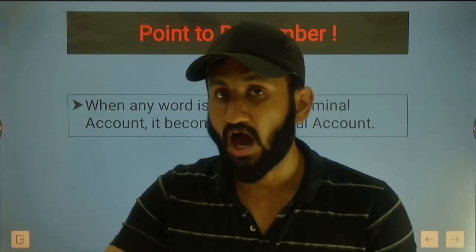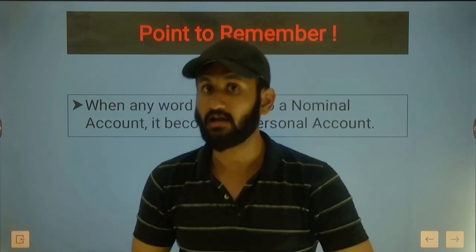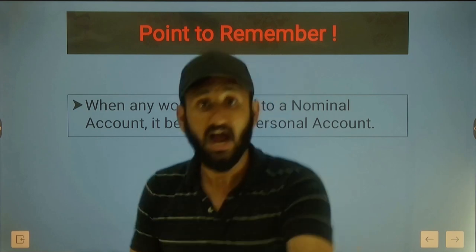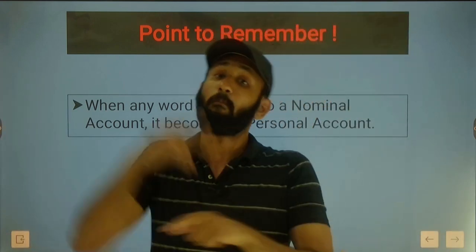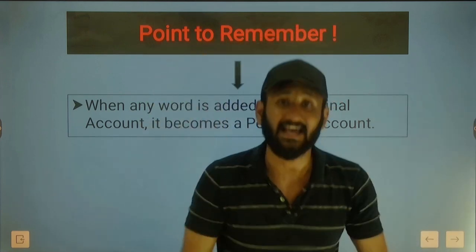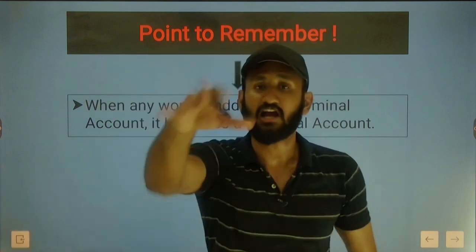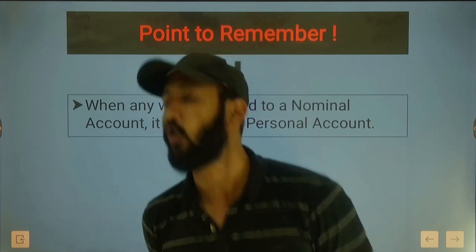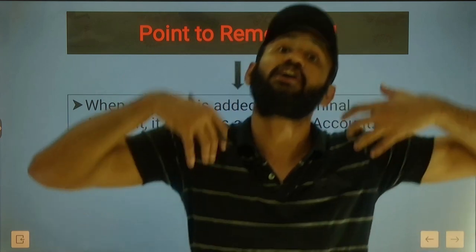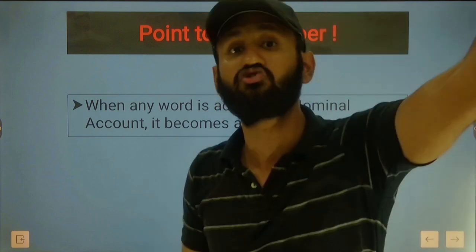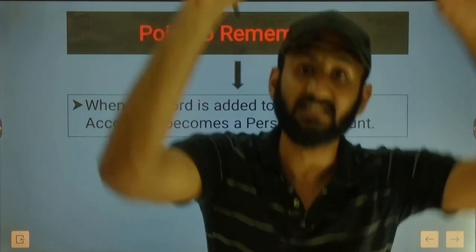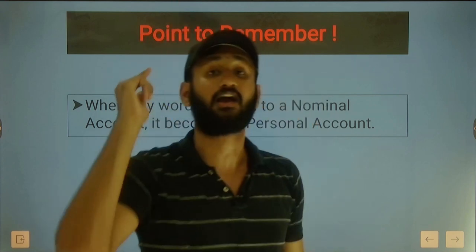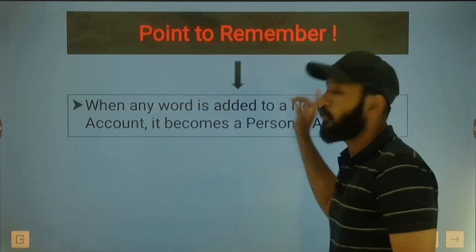An important point: if you add any name before or after a nominal account, it becomes a representative personal account. For example, salary and rent are nominal accounts. If I add a word - outstanding salary account, prepaid rent account, prepaid insurance account - these represent the party. Prepaid insurance account represents the insurance company to whom we paid in advance. Any nominal account with a word added before or after becomes a representative personal account.